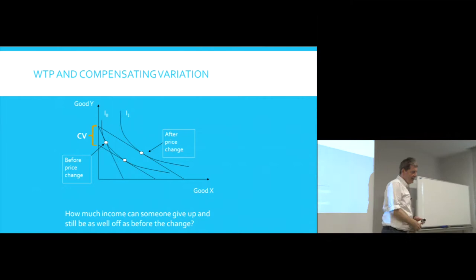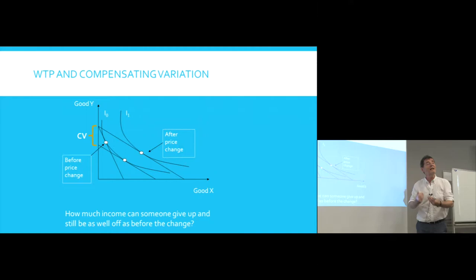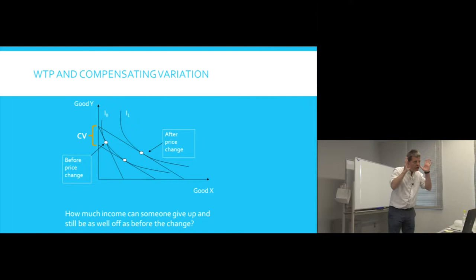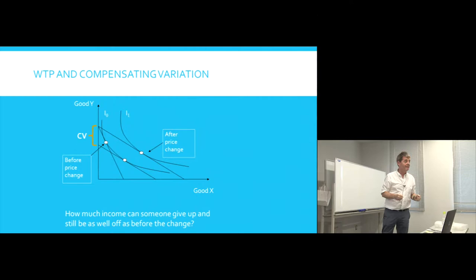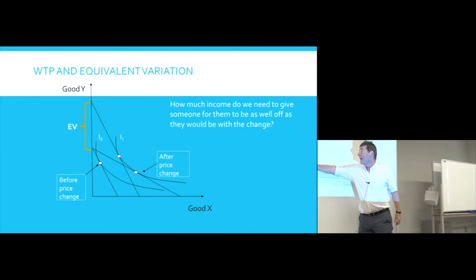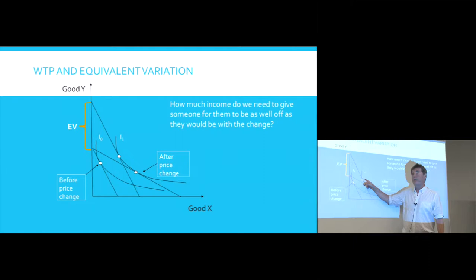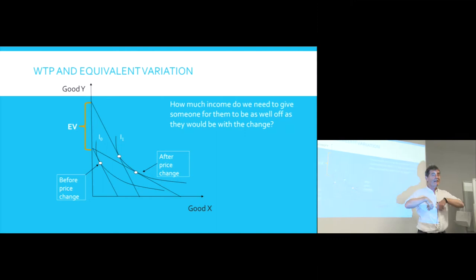There are two approaches. One way: if we make this change that makes you better off, how much money can we take away from you so that you're just as well off as you were originally? The second: if we don't give you the treatment, how much money would we have to give you to make you as well off as if you had received the treatment? If you've been made better off, you're at a higher level of wellbeing; if we don't treat you but instead give you money, how much would that need to be?